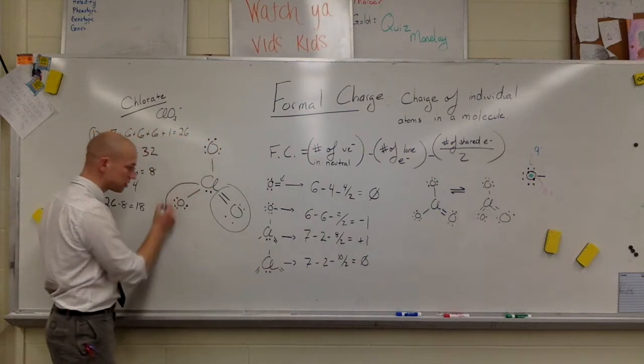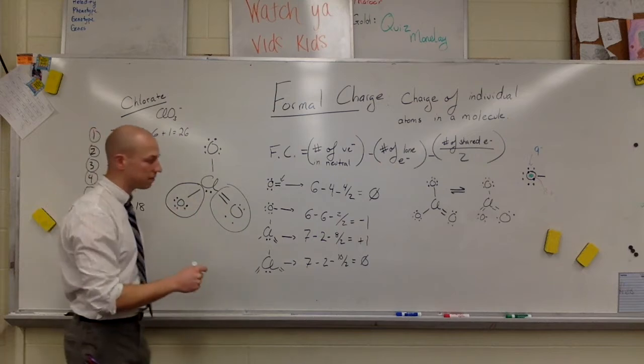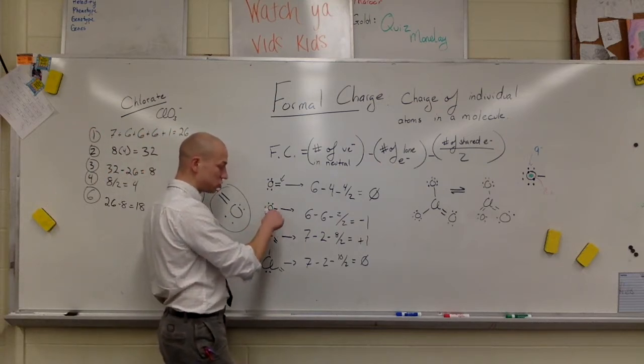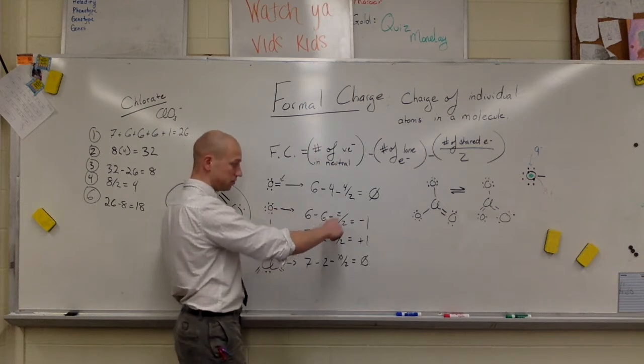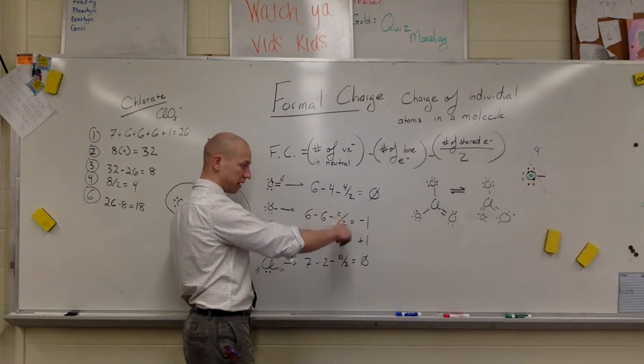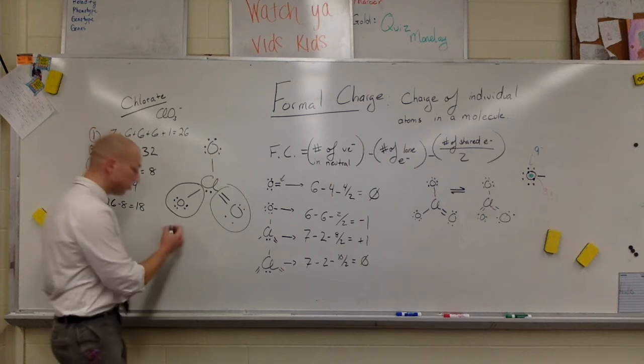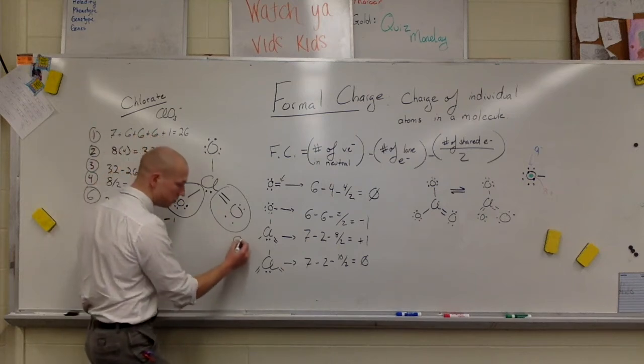However, this bond formation for this chloride compound, we've got six lone electrons and two shared electrons. So that's six minus six lone, two shared, divided by two, gives us a negative one. So the formal charge for this would be negative one, and the formal charge for this would be zero.